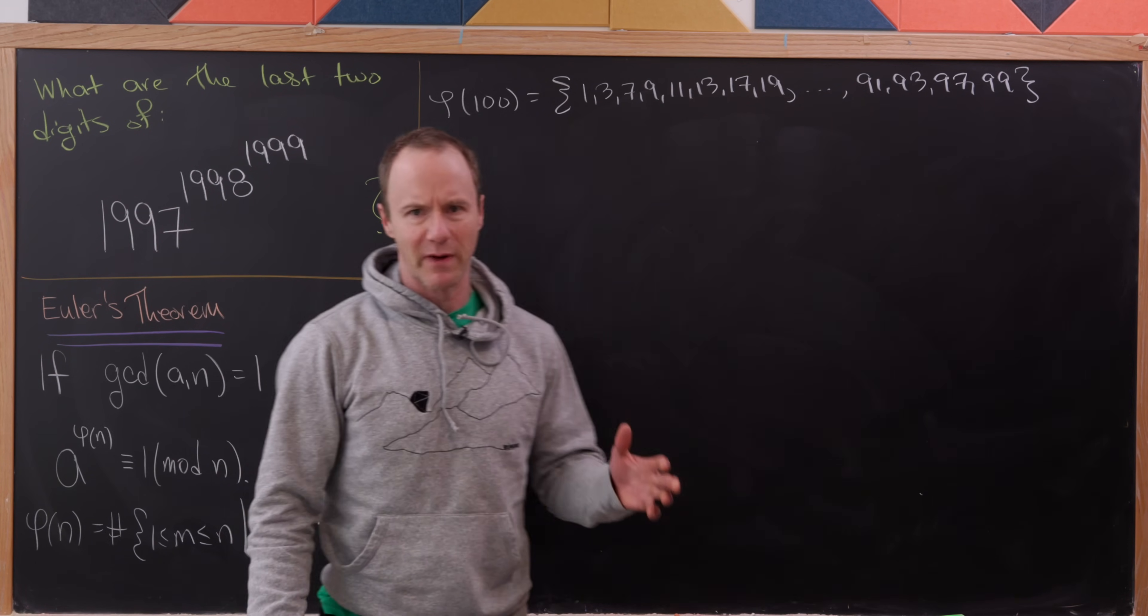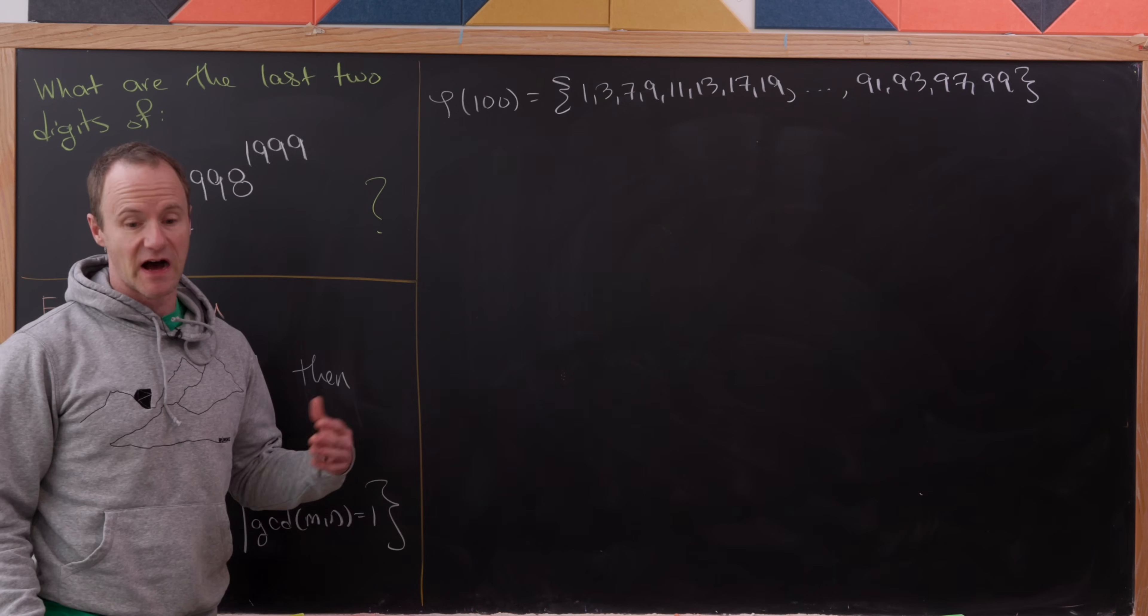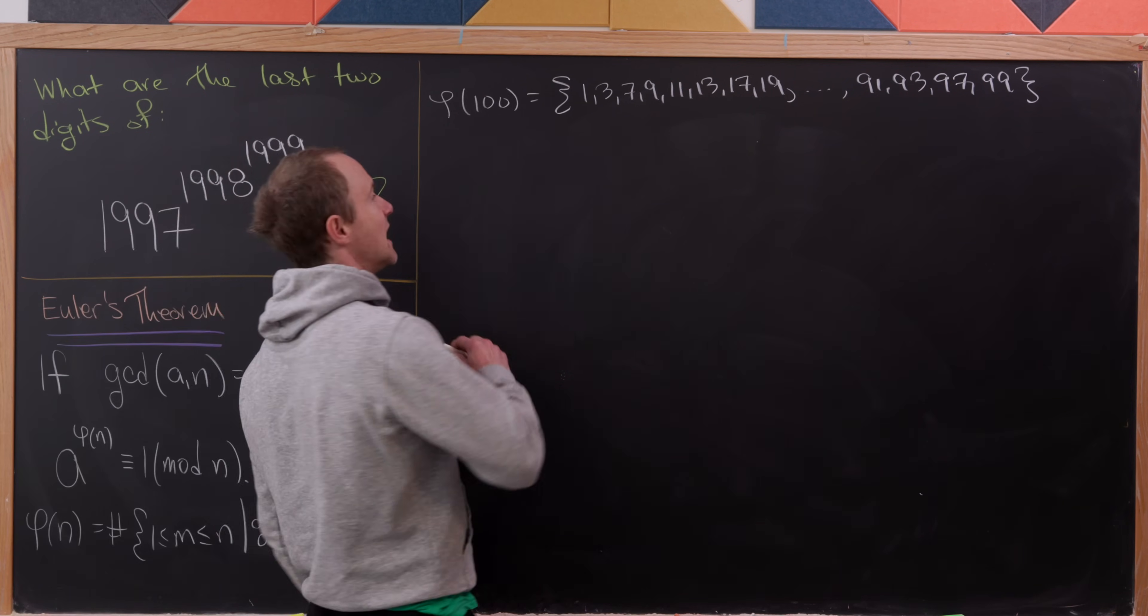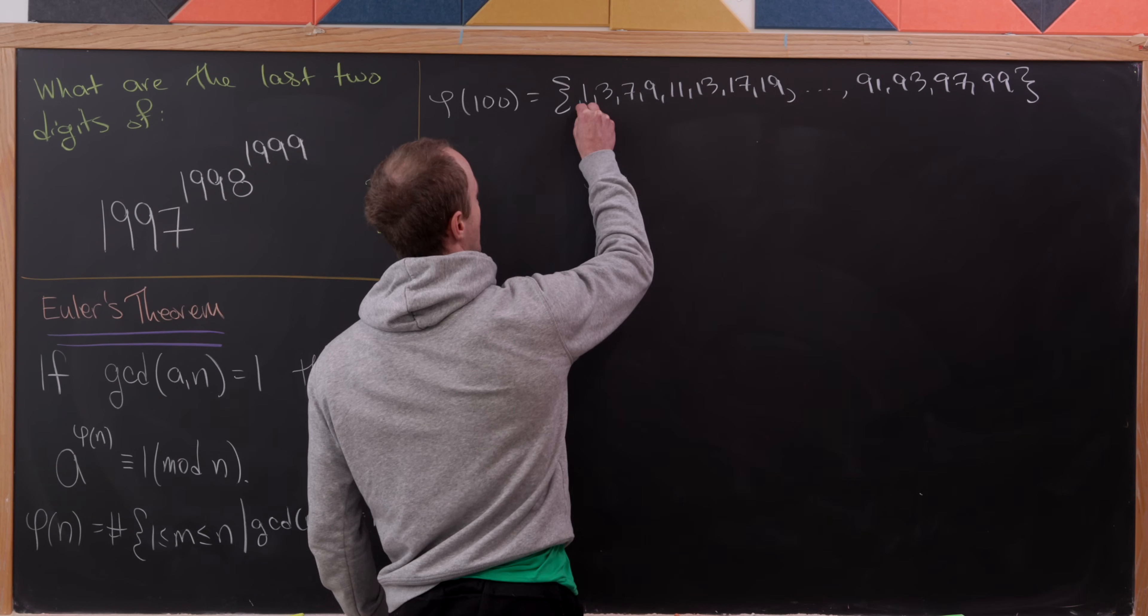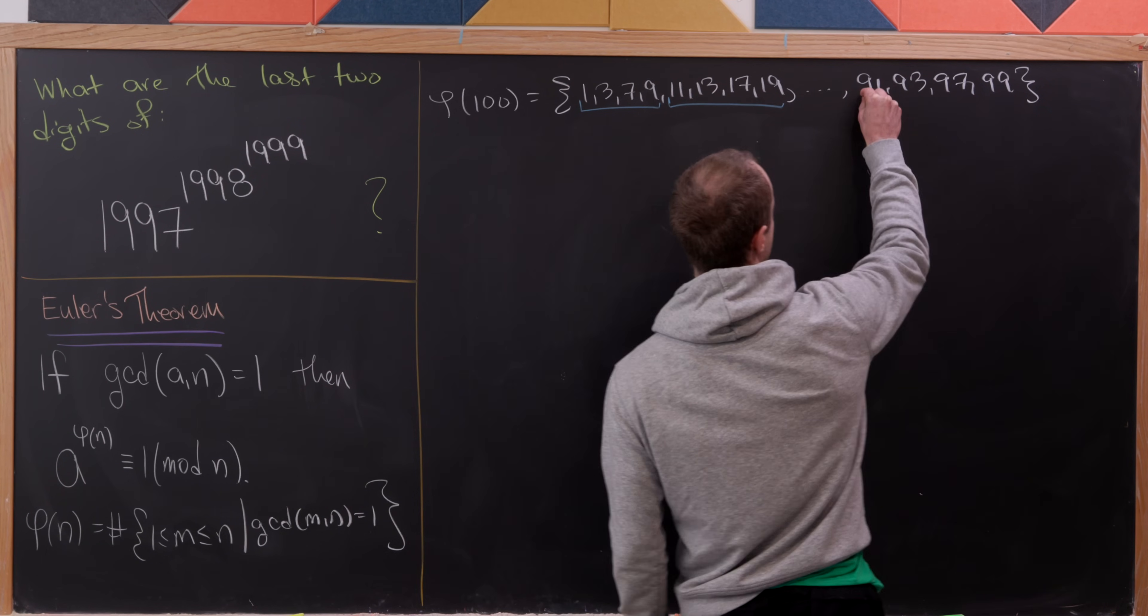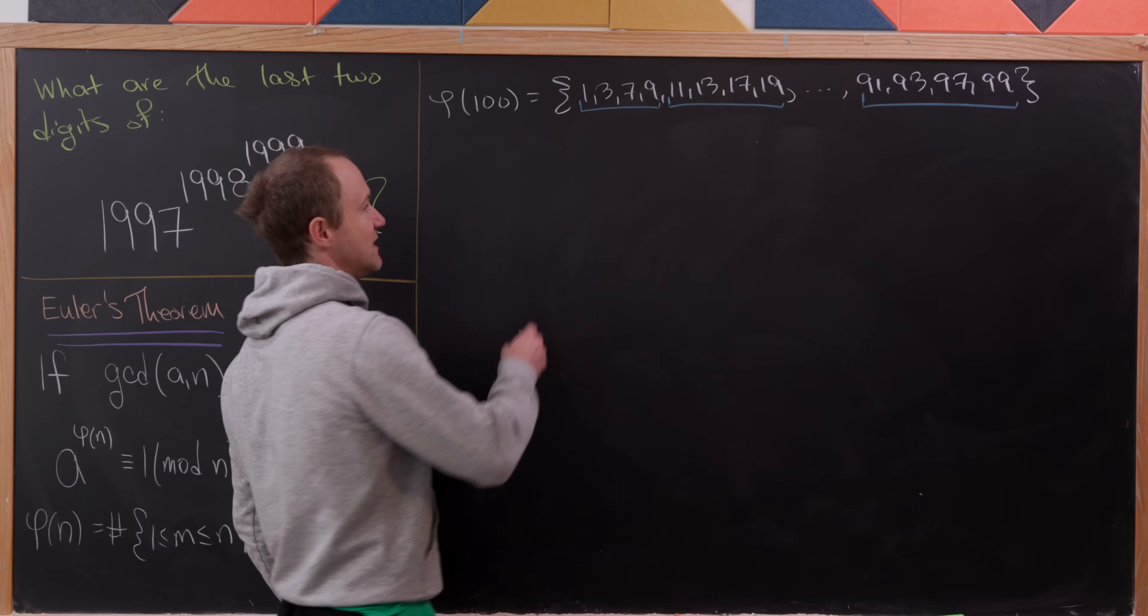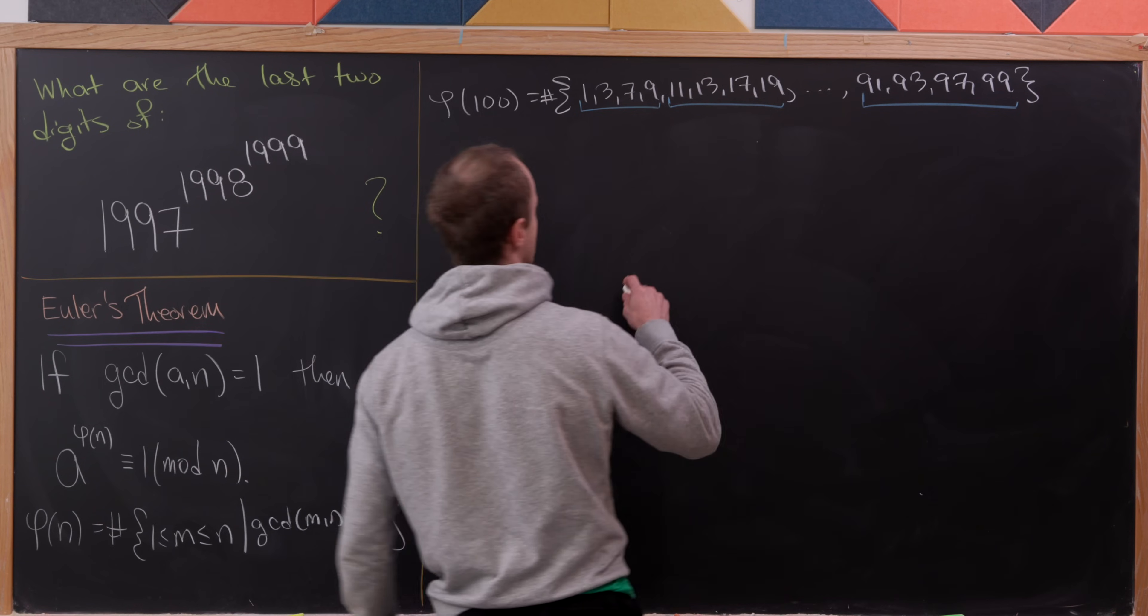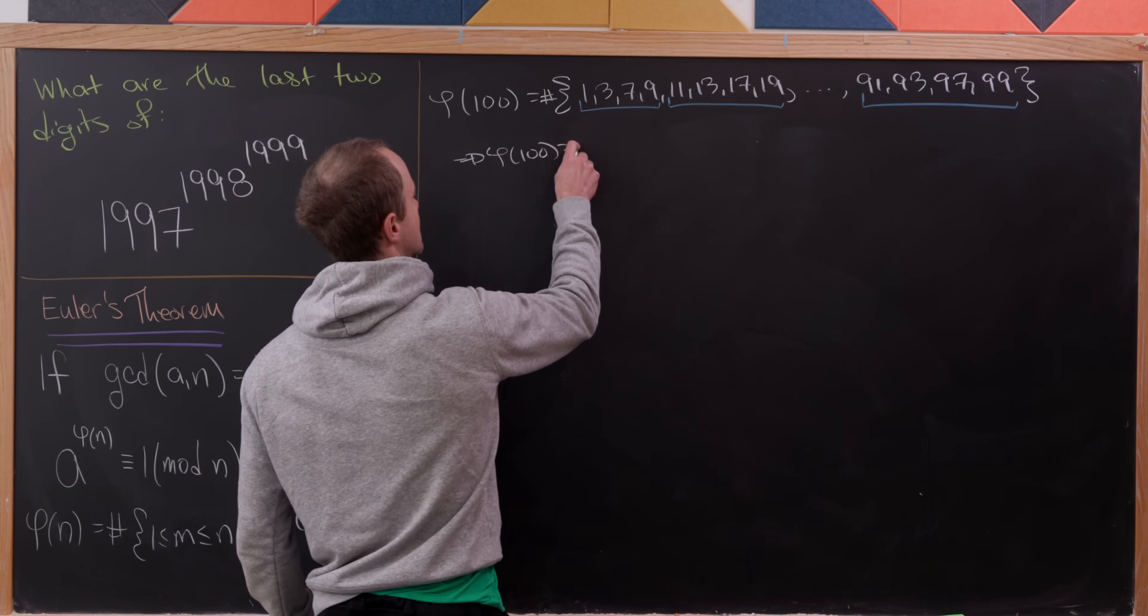Because divisible by 2 means ends in an even number and divisible by 5 means ends in 0 or 5, it's really easy to make this list. We can count these up in chunks. We've got 4 numbers that start with 0, 4 numbers that start with 1, up to 4 numbers that start with 9. So we have 10 groups of 4 numbers, meaning φ(100) equals 40.